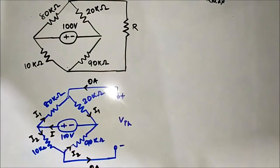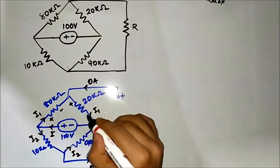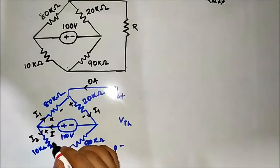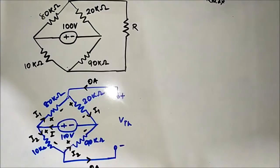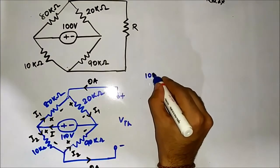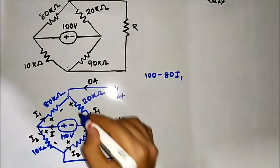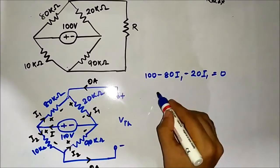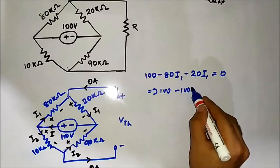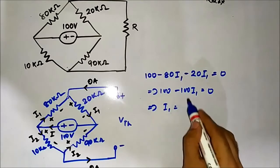We apply KVL in the first closed path. The equation is: 100 minus 80·I1 minus 20·I1 equals zero. That implies 100 minus 100·I1 equals zero, so I1 equals 1 ampere.